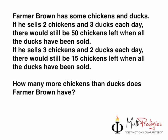Now I have one last question which looks a bit like this — don't get freaked out, it's similar and not that difficult. Farmer Brown has some chickens and ducks. If he sells 2 chickens and 3 ducks daily, there would still be 50 chickens left when all the ducks have been sold. If he sells 3 chickens and 2 ducks each day, there would still be 15 chickens left when all the ducks have been sold. How many more chickens than ducks does Farmer Brown have? Pause this video, write the question down, and do it right now. The keyword — write it down 3 times.